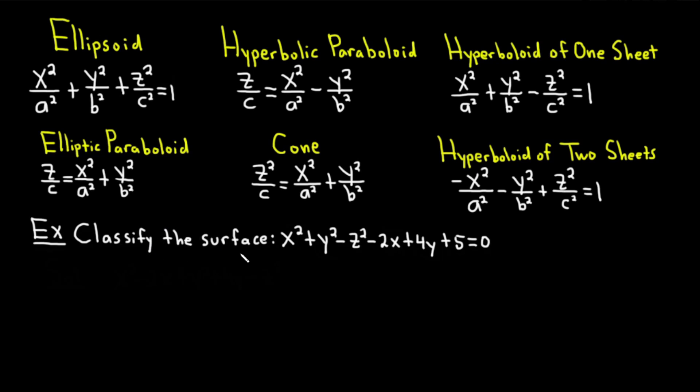Our example is to classify this particular surface: x squared plus y squared minus z squared minus 2x plus 4y plus 5 equals 0. Let's go ahead and work through it very carefully. So in order to do this problem, what we're going to do is we're going to complete the square and then just basically use matching to match it to one of these quadric surfaces.